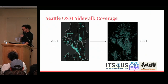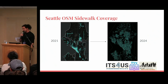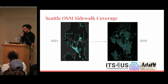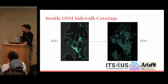This shows the huge progress in the last three years in Seattle — kudos to the community. The first picture is OSW in Seattle in 2021, and a recent picture shows the difference is huge. This allows applications like AccessMap to actually function.